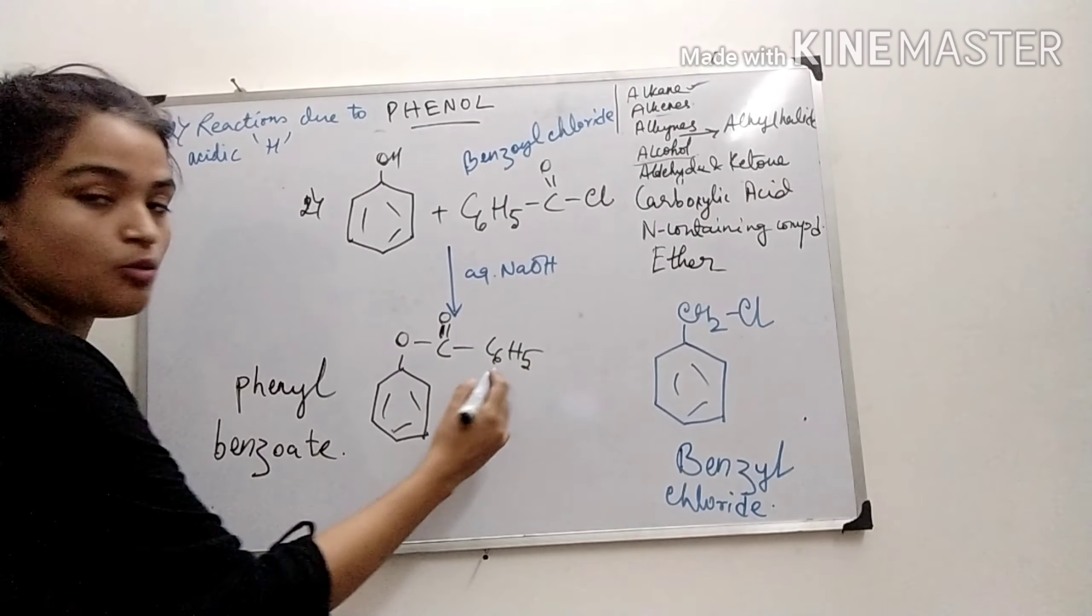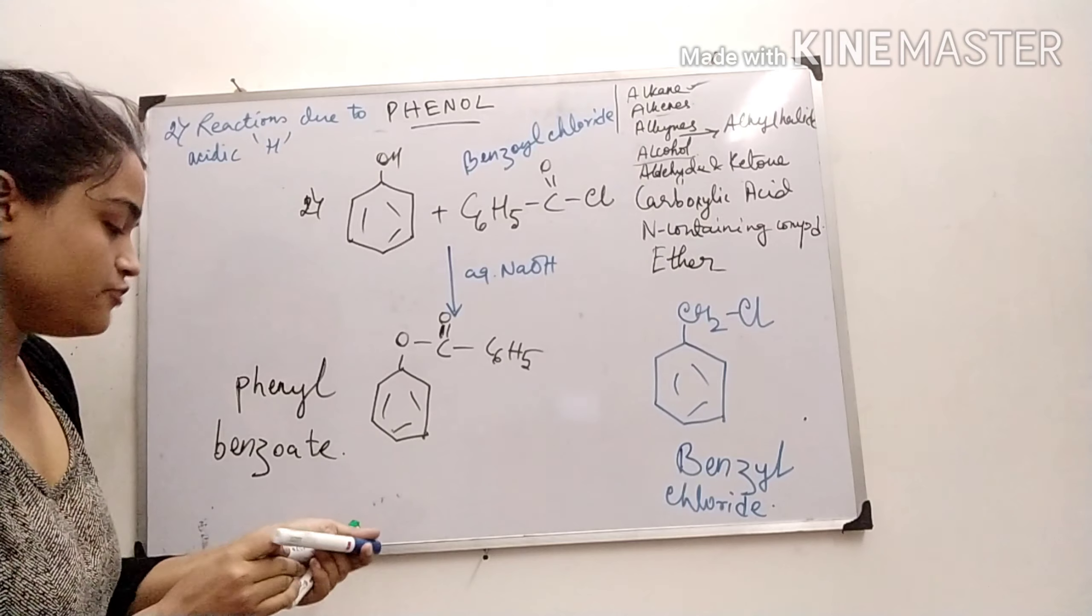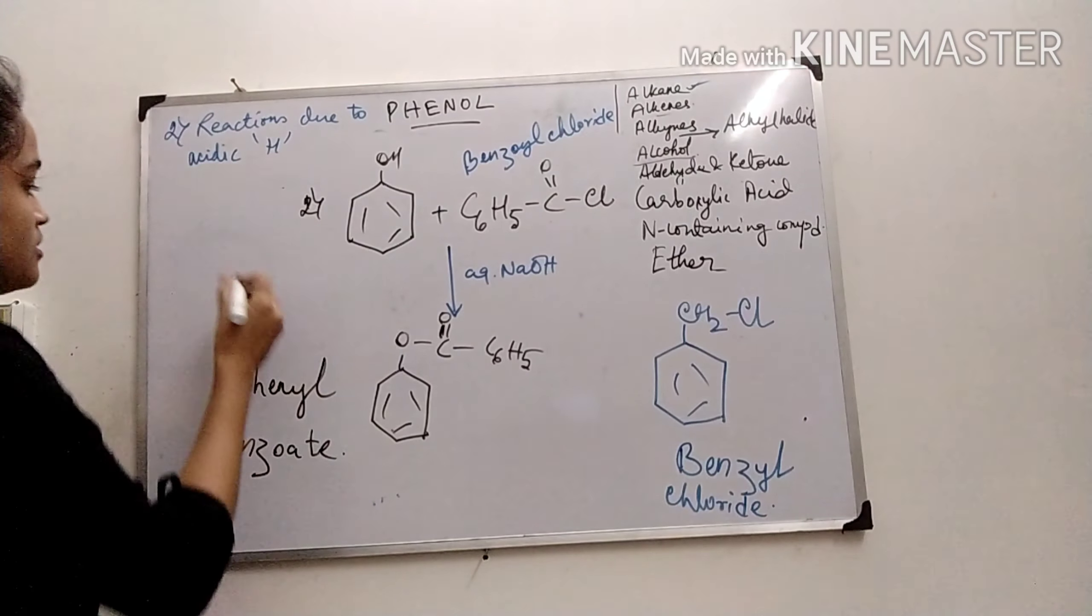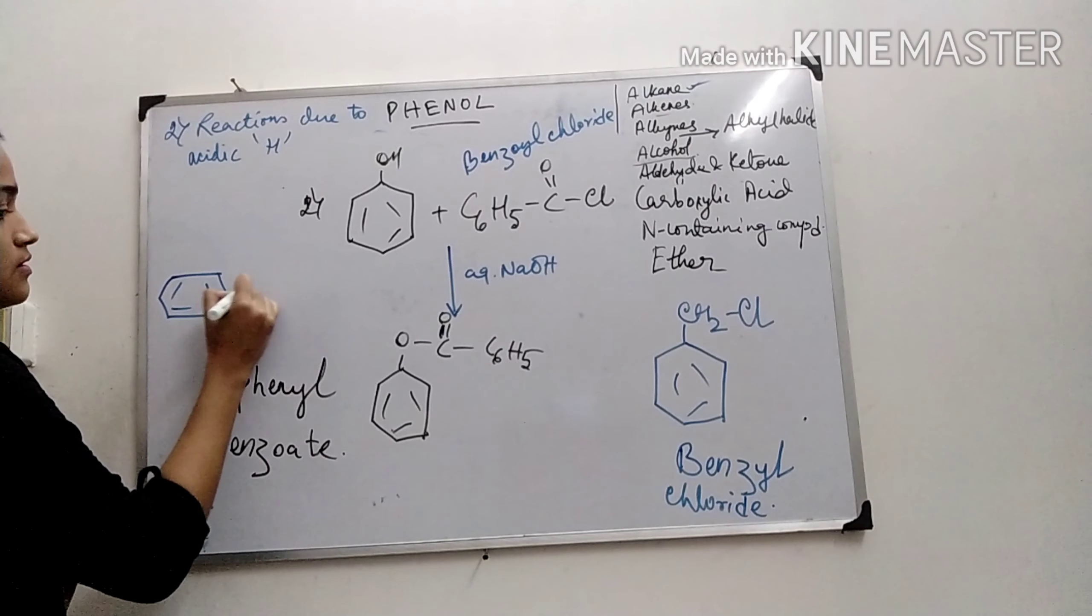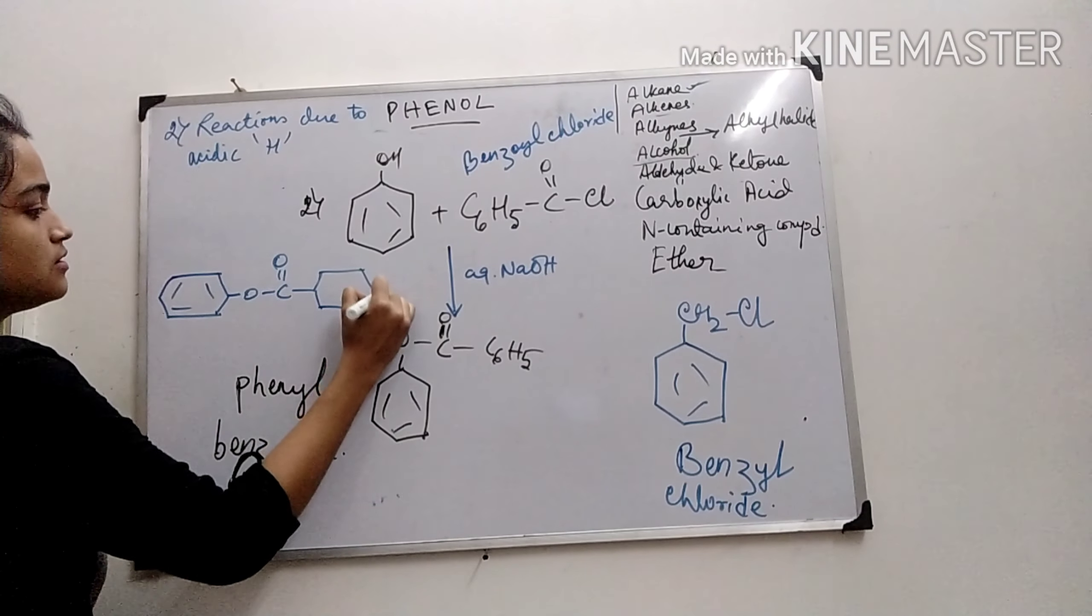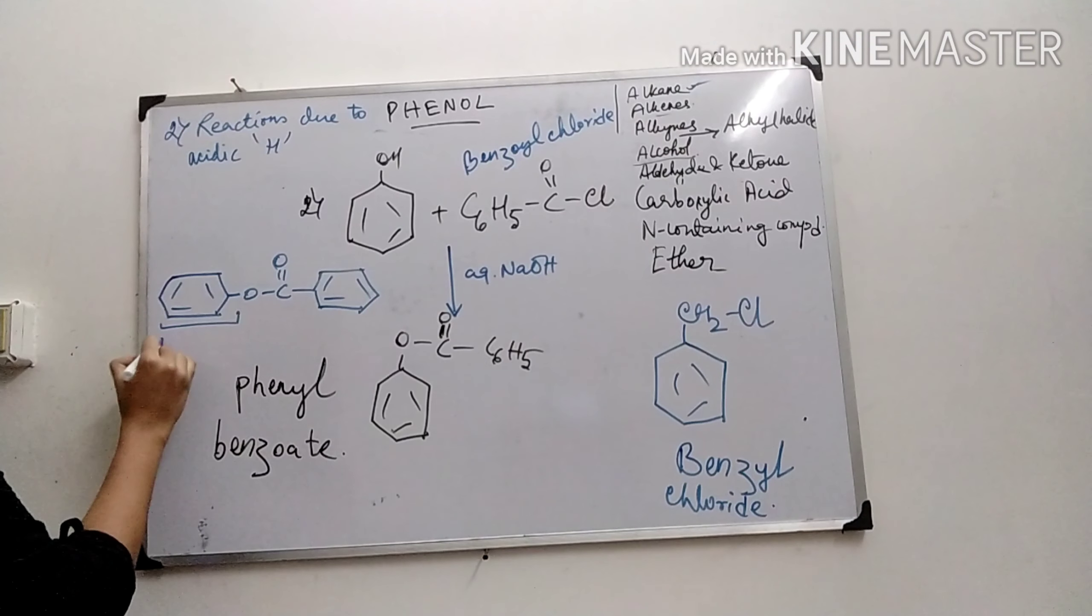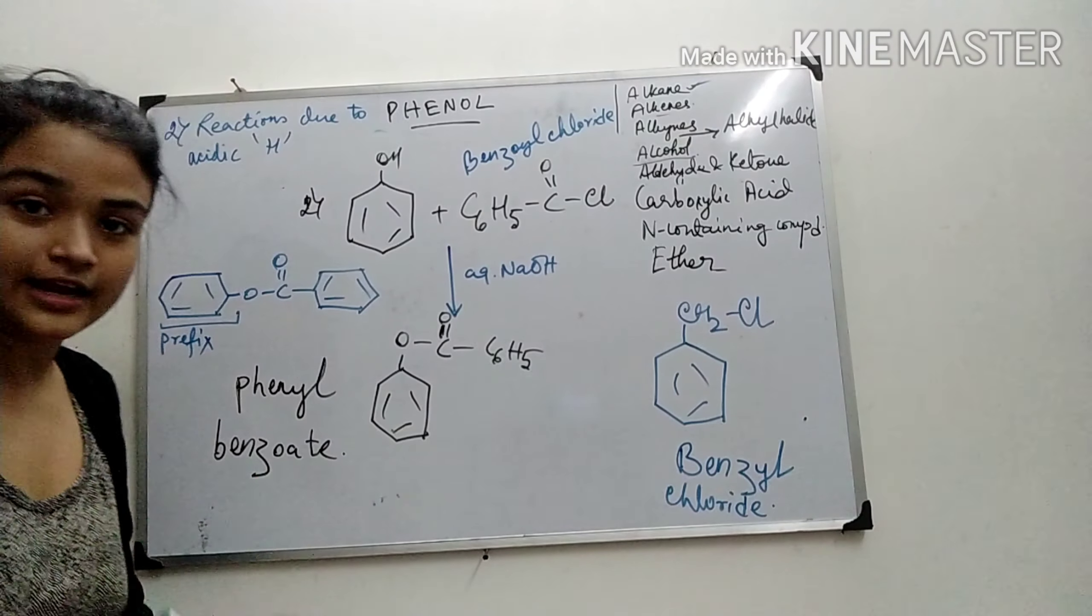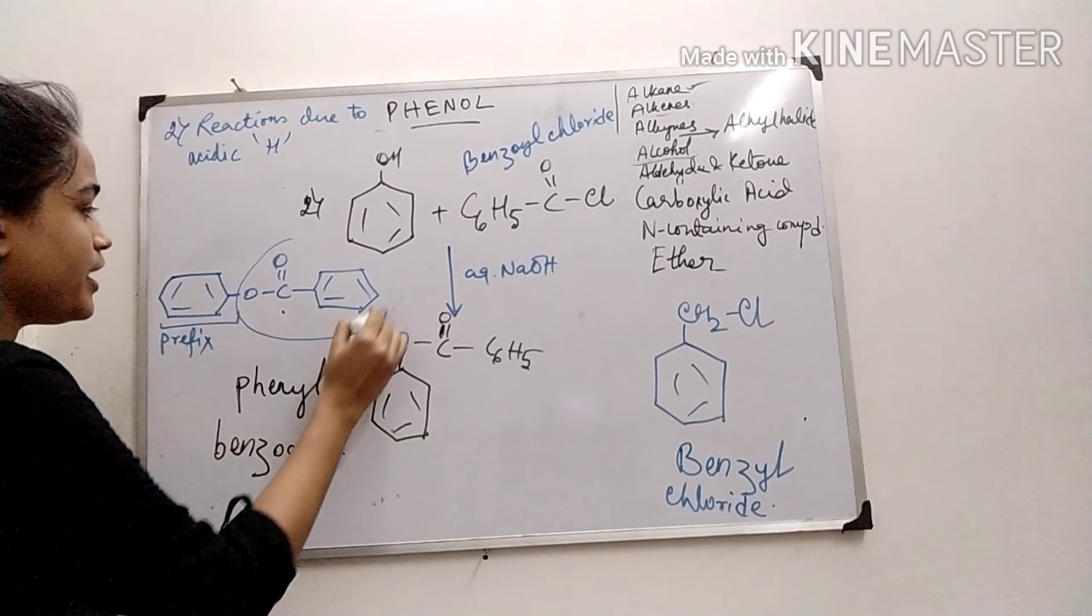See, this is a benzene group, C6H5. If I redraw the structure, it looks like this. This is the prefix part, that's why it comes first: phenyl. This is the actual functional group, which is the benzoyl group.